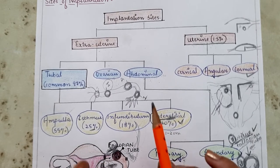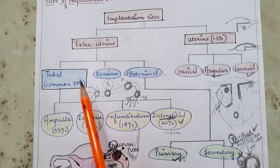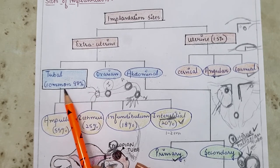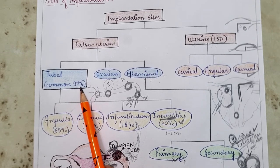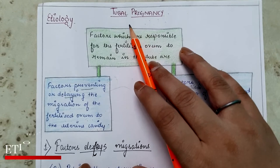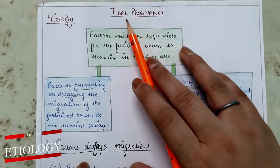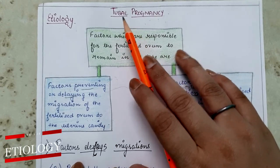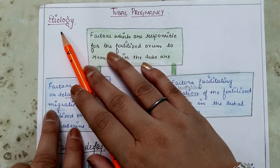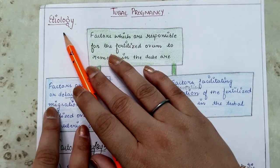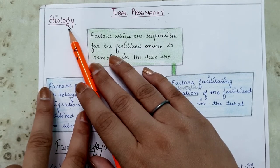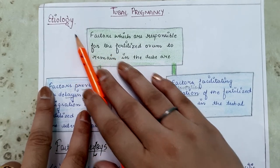This lecture focuses mainly on tubal pregnancy, as it is the most common type of ectopic pregnancy. Now we look at its etiology — why the fertilized ovum implants inside the fallopian tubes rather than the uterine cavity.